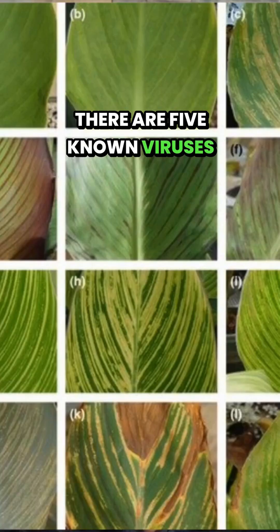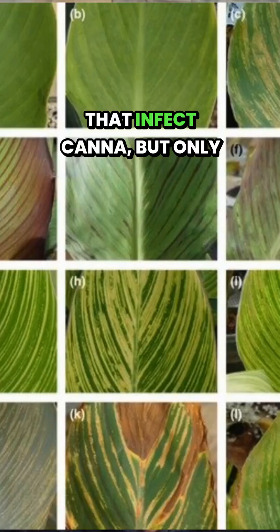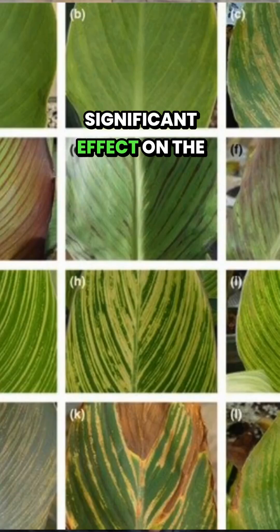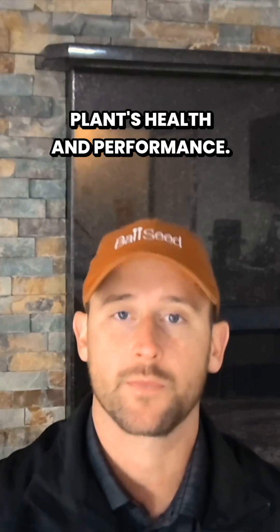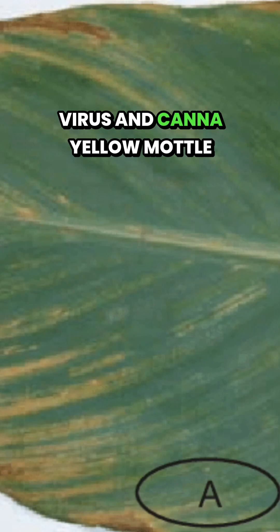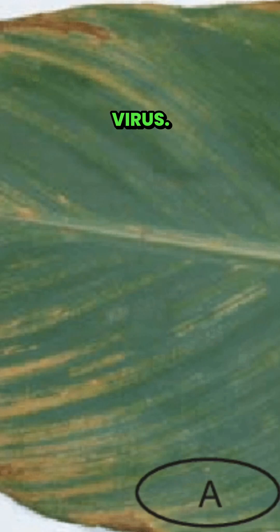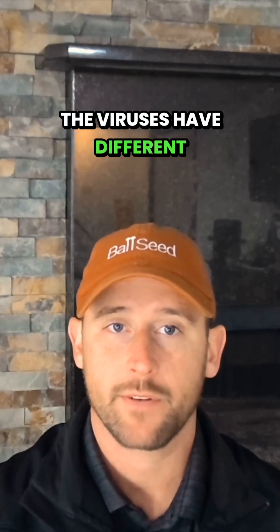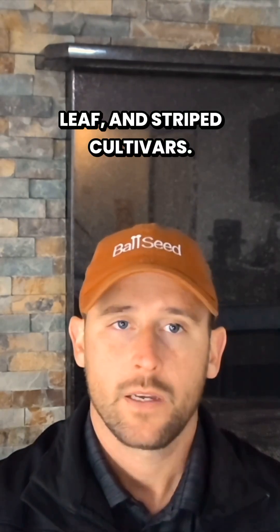There are five known viruses that infect canna, but only two of them seem to have significant effect on the plant's health and performance. These are canna yellow streak virus and canna yellow mottle virus. The viruses have different performance in green leaf, dark leaf, and striped cultivars.